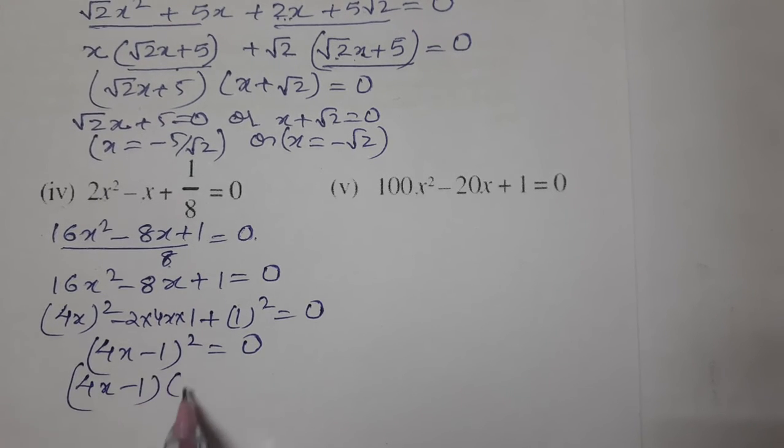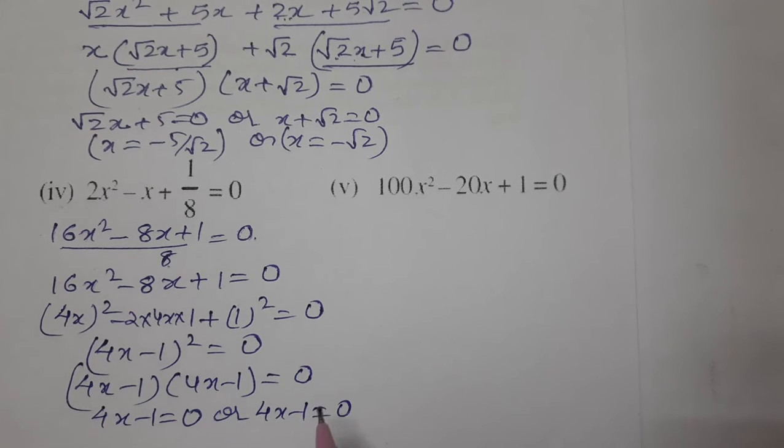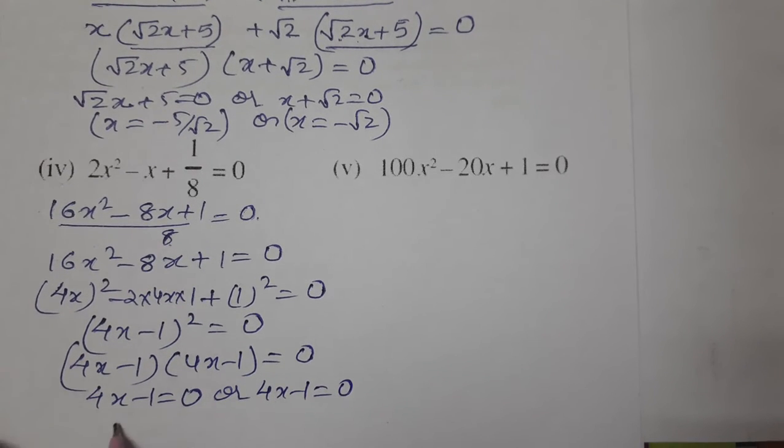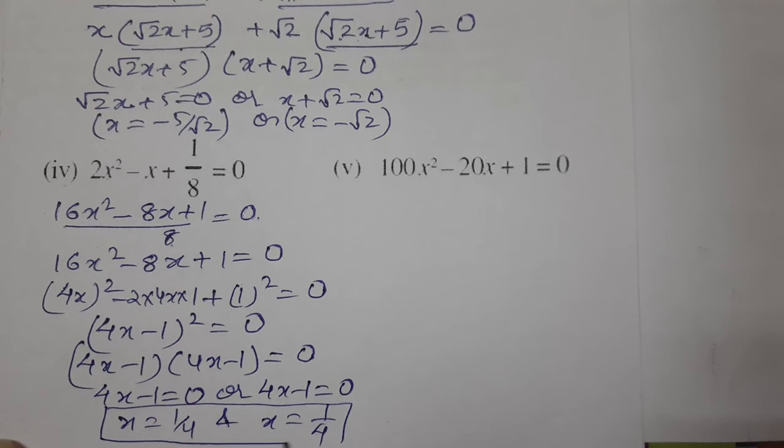So (4x - 1)(4x - 1) = 0. This means 4x - 1 = 0. We are getting repeated roots: x = 1/4 and x = 1/4. There are two repeated roots in this question.